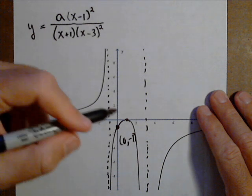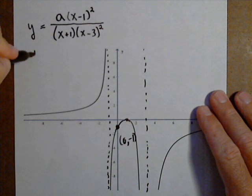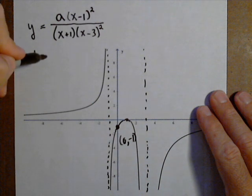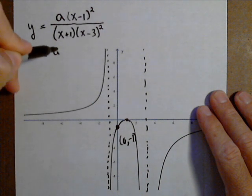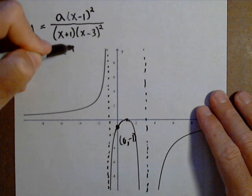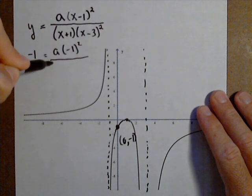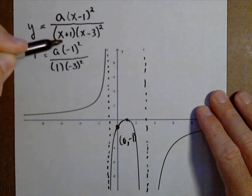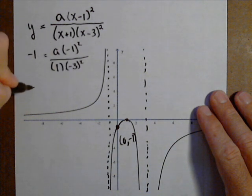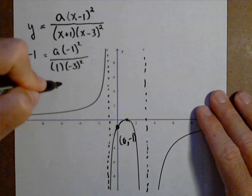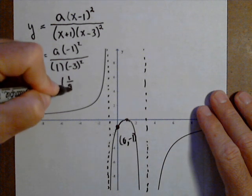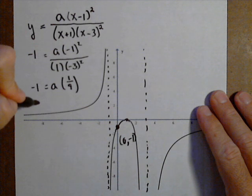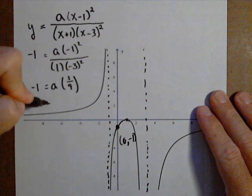So y equals, we're going to plug negative one in for y because it's the y value, and zero in for x. So we have negative one squared over one times negative three squared. So we have negative one equals a times positive one-ninth because of the squares. So a equals negative nine.